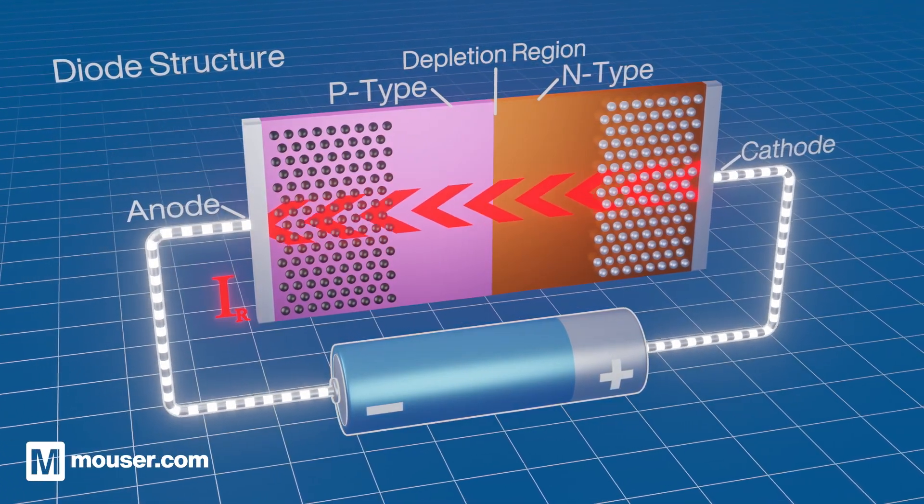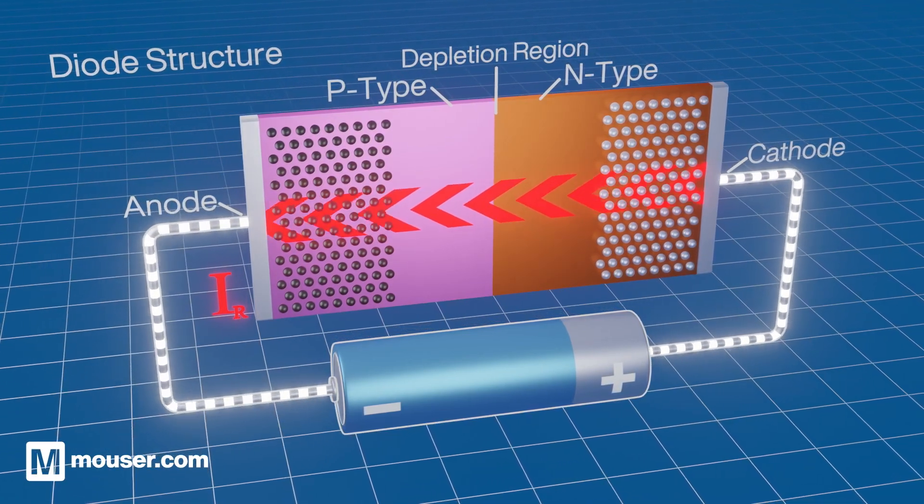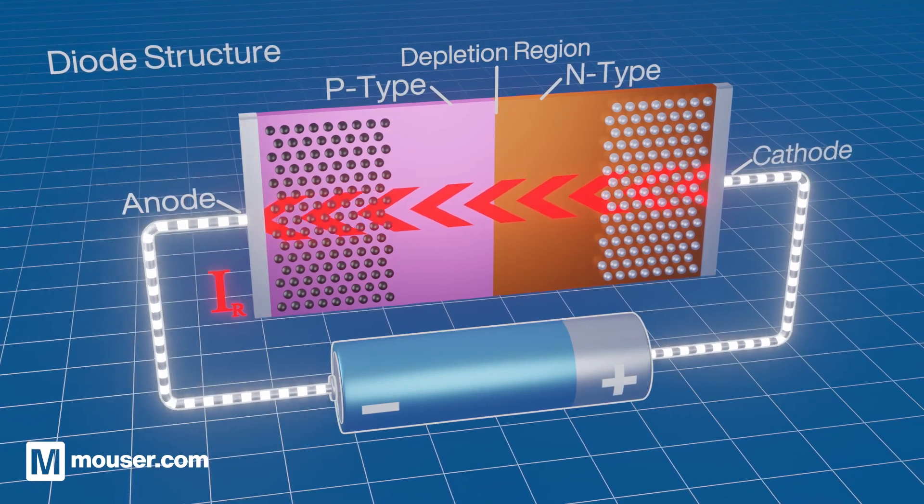If the reverse voltage exceeds the diode's peak inverse voltage, the maximum reverse voltage it can stand, breakdown occurs, current flows and damages or destroys the device.